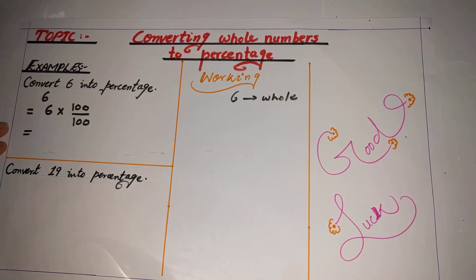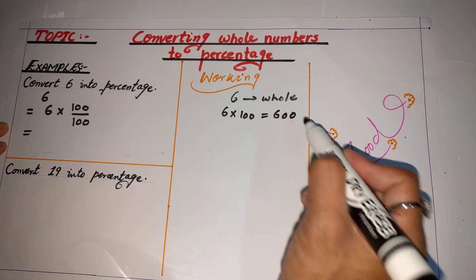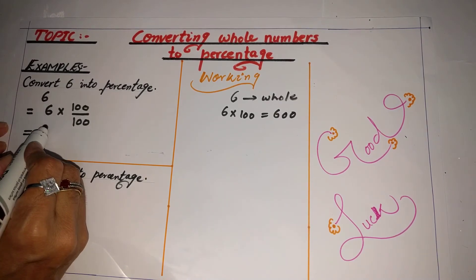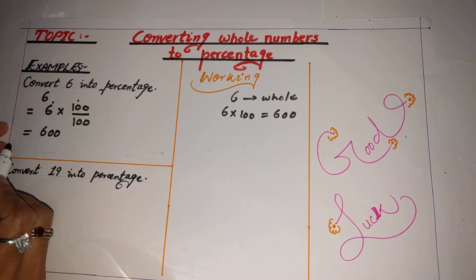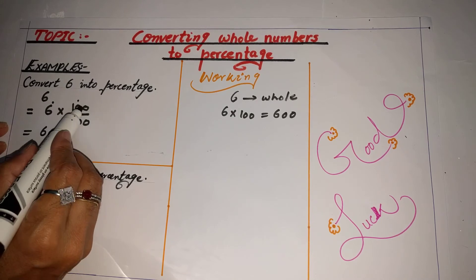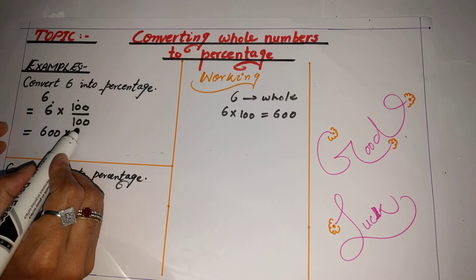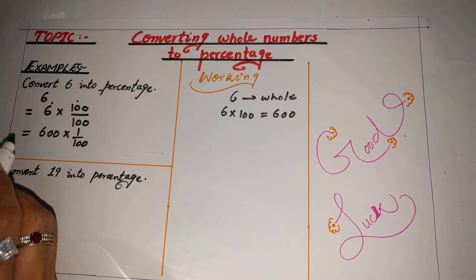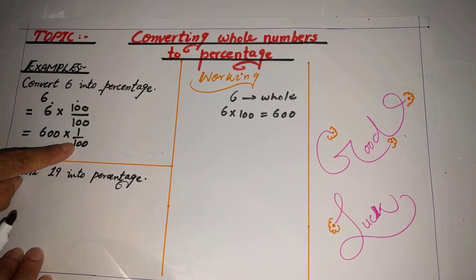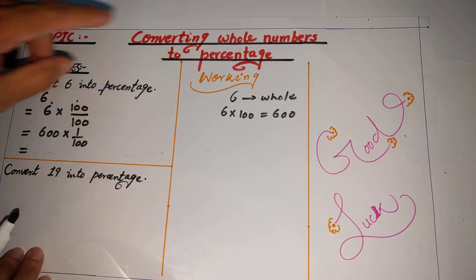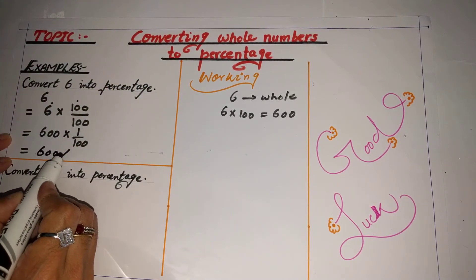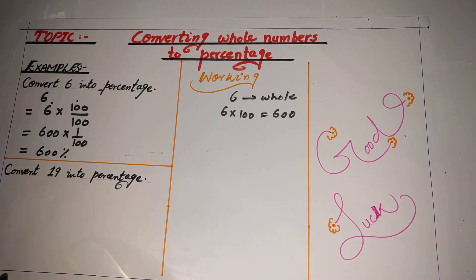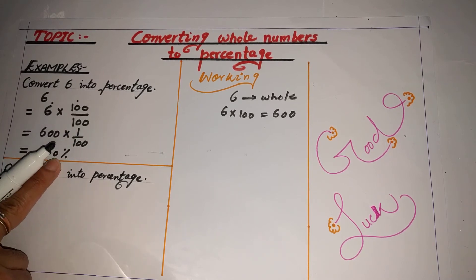6 times 100 equals 600, so we write 600 as the numerator. When 100 is multiplied by 6, the left number is 1, giving us 1/100 as the fraction part. So we have 600 over 100. Now we have 100 as a denominator, which means we can convert the given number as a percentage. This 100 as a denominator is converted into the percentage sign. So the answer is 600%.